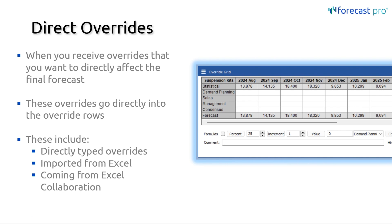When you receive information from these sources and you want them to directly affect the final forecast, you will enter overrides directly. In the tool, you can have up to 10 override rows, and these rows are usually named after people or groups of people that you're receiving this information from. You will enter their adjustments directly into this override grid and they will affect the final forecast. You can either type these overrides in directly, import them from an outside source, or use the built-in Excel collaboration function to get these overrides directly into the override grid.